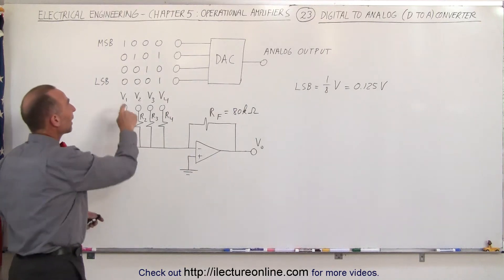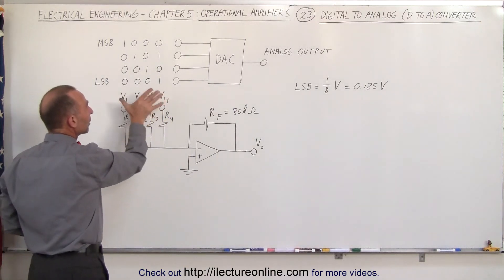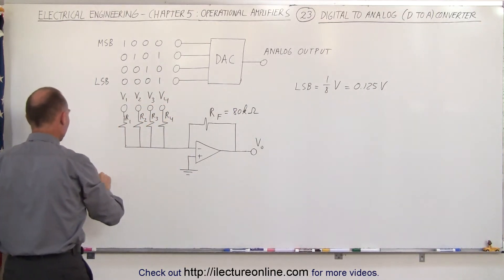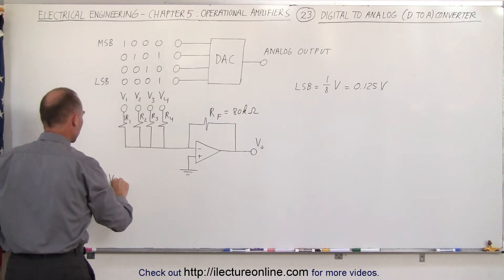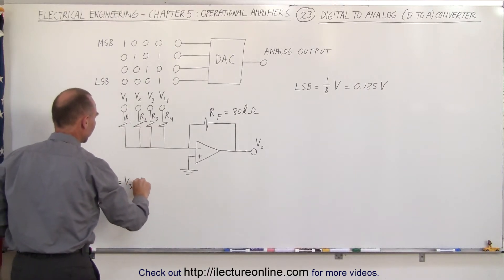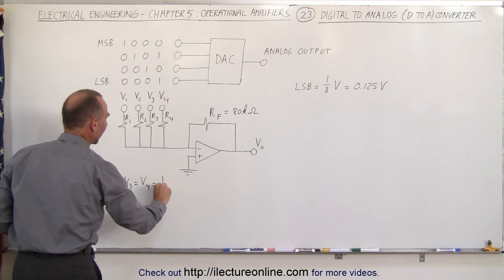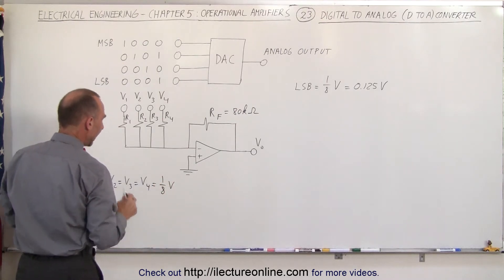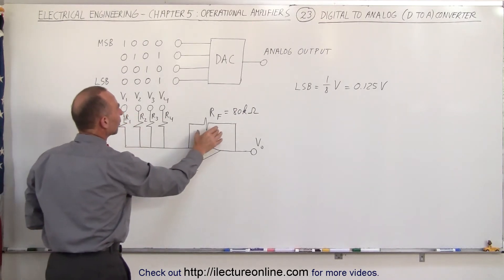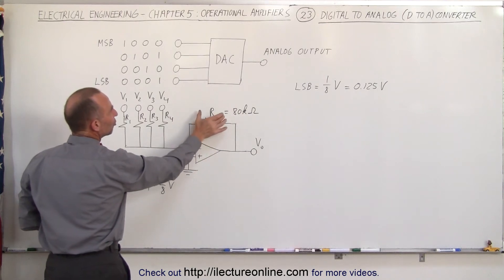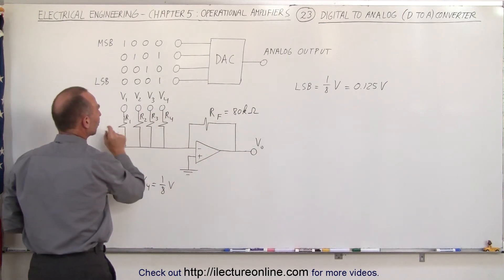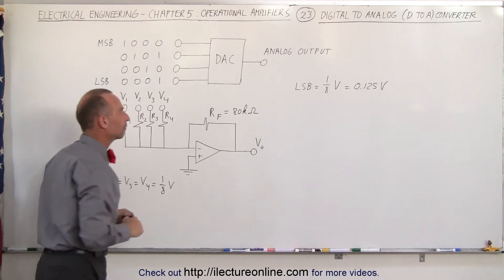We can do that not by changing the voltage inputs, we can make them all the same. In other words, we can make V1 equal to V2 equal to V3 equal to V4, which is equal to one eighth of a volt. And we can then have the amplification effect done by changing the ratio of RF to each of the four resistors, R1, R2, R3, and R4.